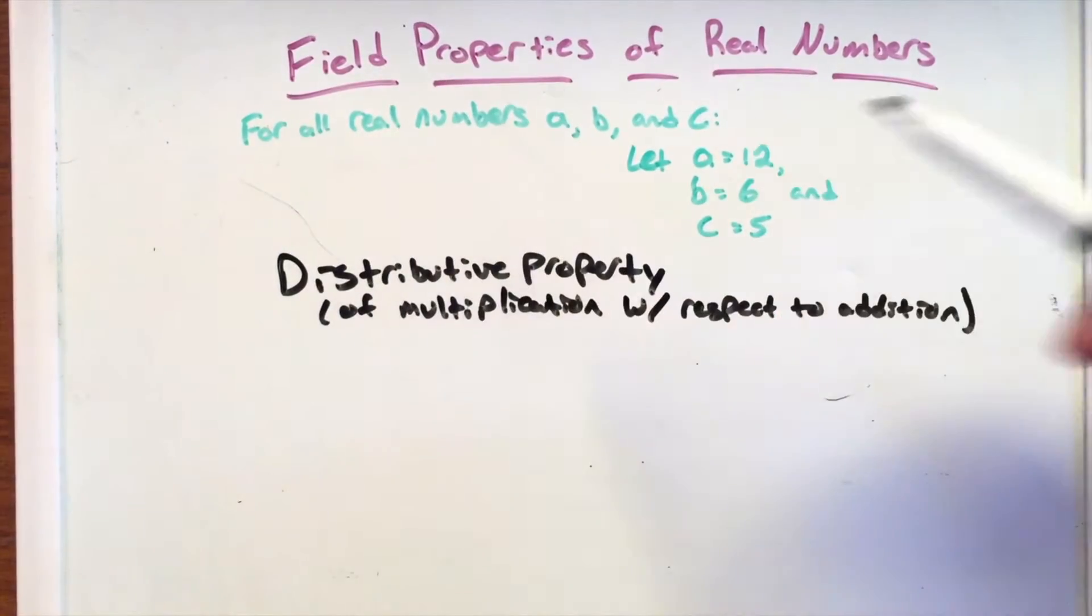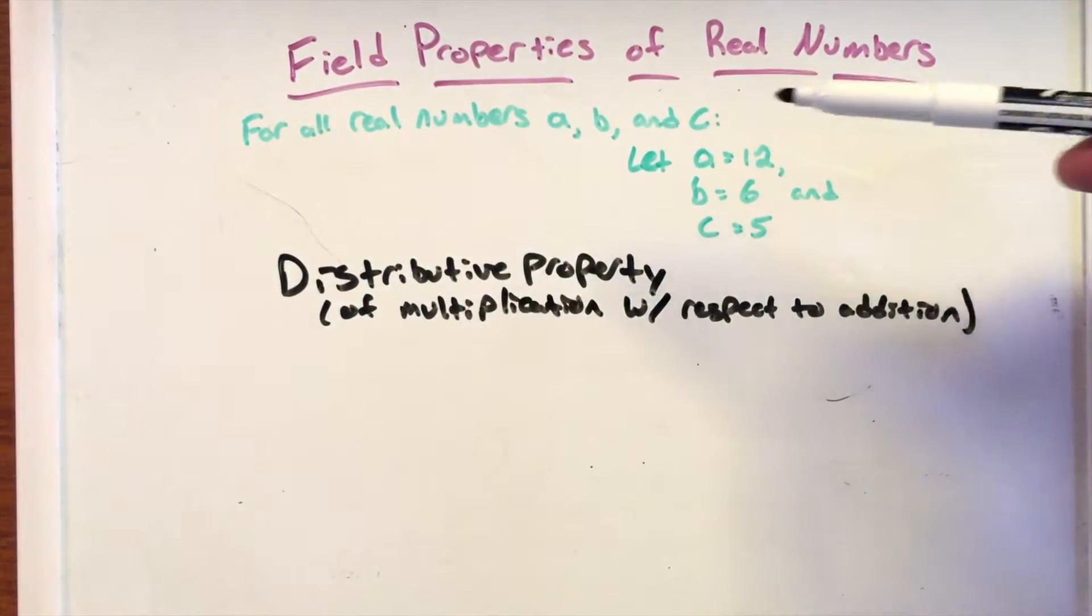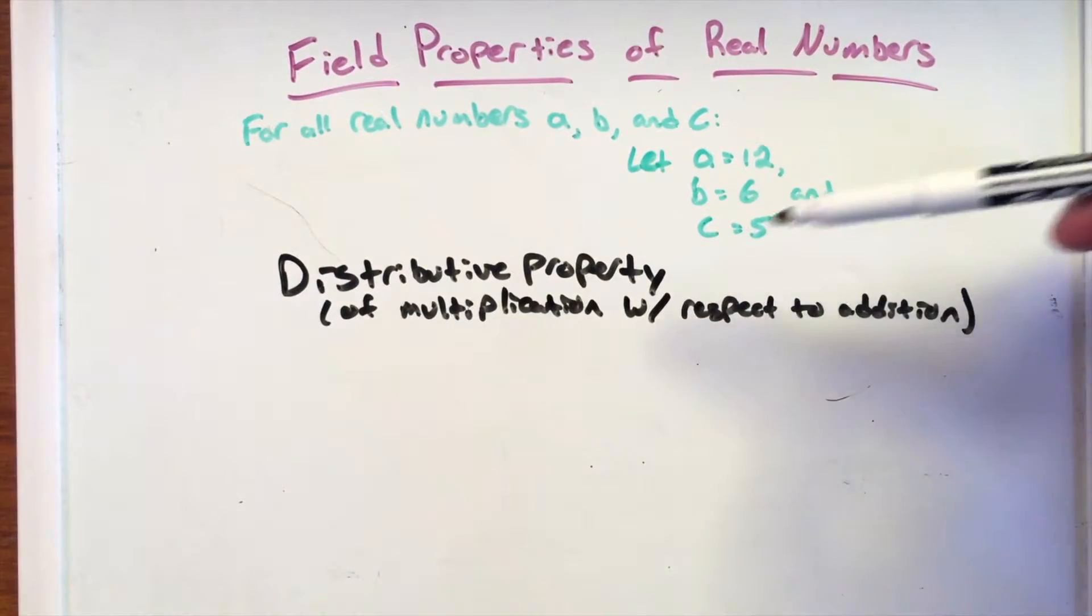In this video, we're talking about the field properties of real numbers. For all real numbers A, B, and C, let A = 12, B = 6, and C = 5 for our examples.